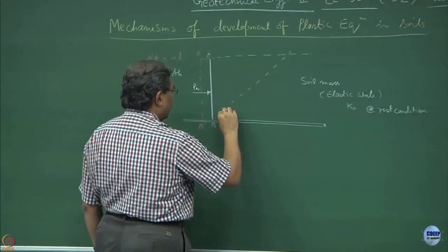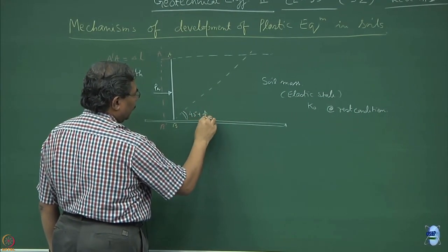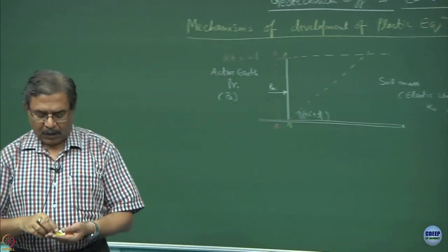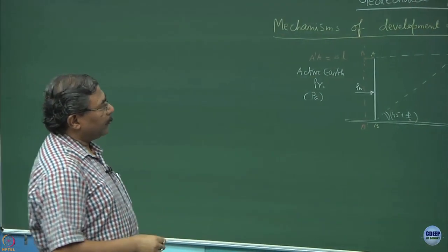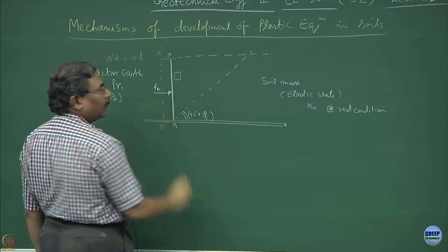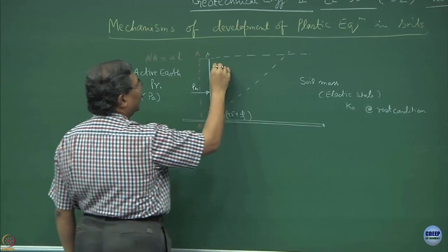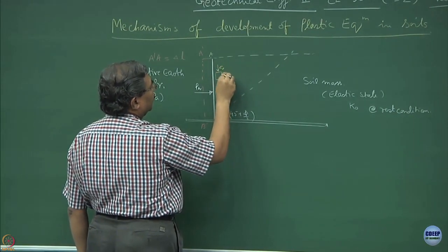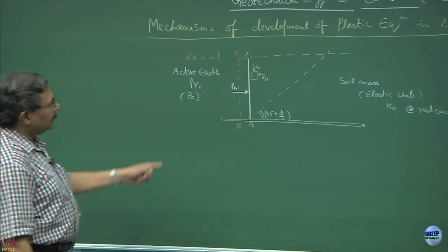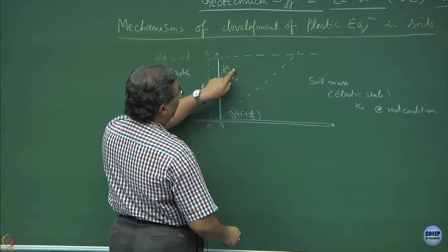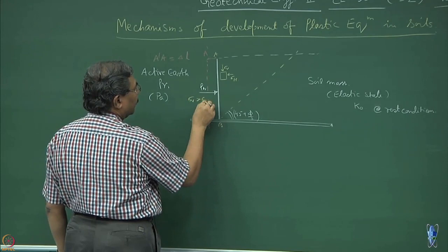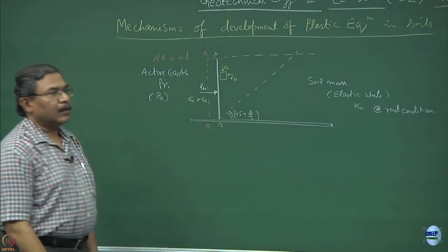This angle is going to be 45 plus phi by 2 — we have proven this. Now, if you take an element somewhere inside the soil mass and denote the stresses as sigma v and sigma h, what has caused this type of situation is that sigma v happens to be greater than sigma h.